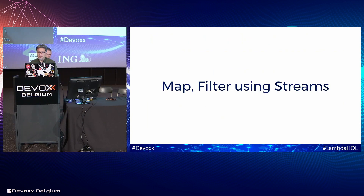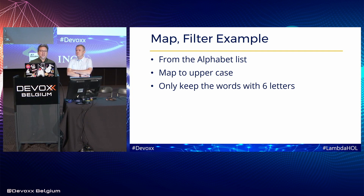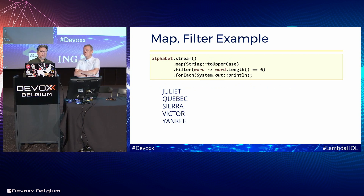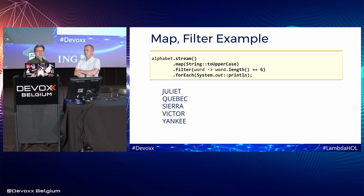A quick background on simple stream operations: let's take the alphabet words and do a couple of simple tasks. First, map each word to uppercase, then keep only the words that have six letters using filter. We take the alphabet list, stream it, map with String::toUpperCase, then filter where word length equals six, then print. The result is the uppercase words that all have six letters. That's pretty simple — just a warm-up on map and filter.